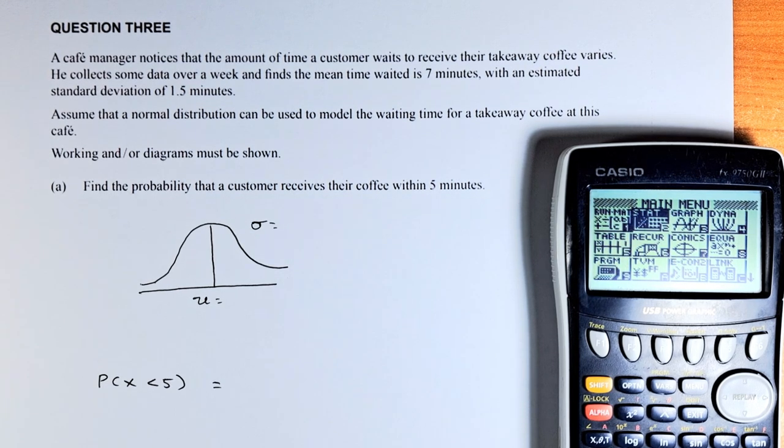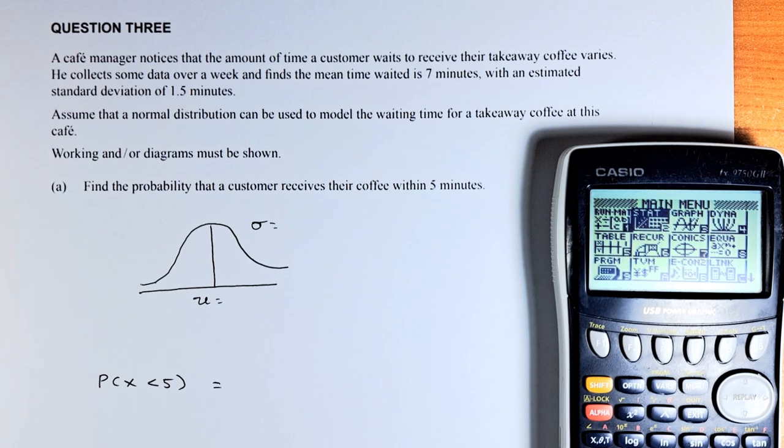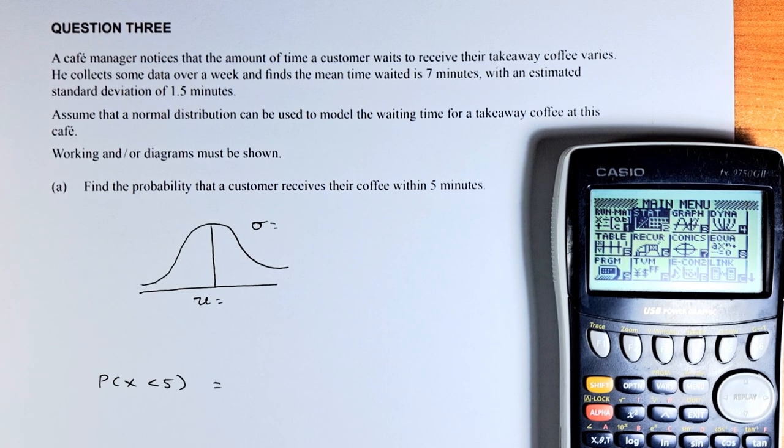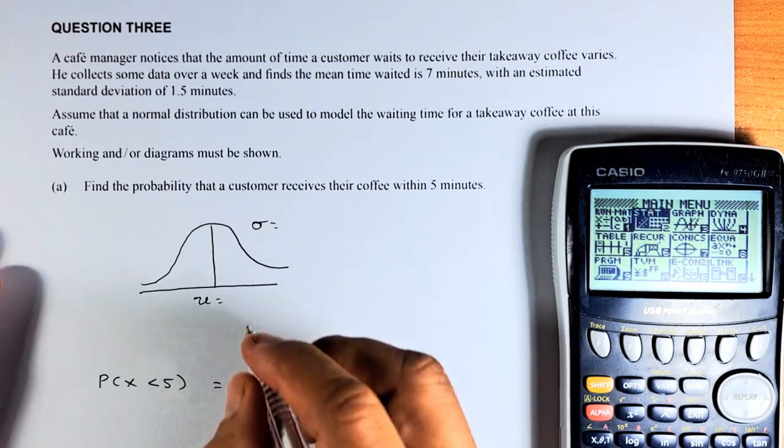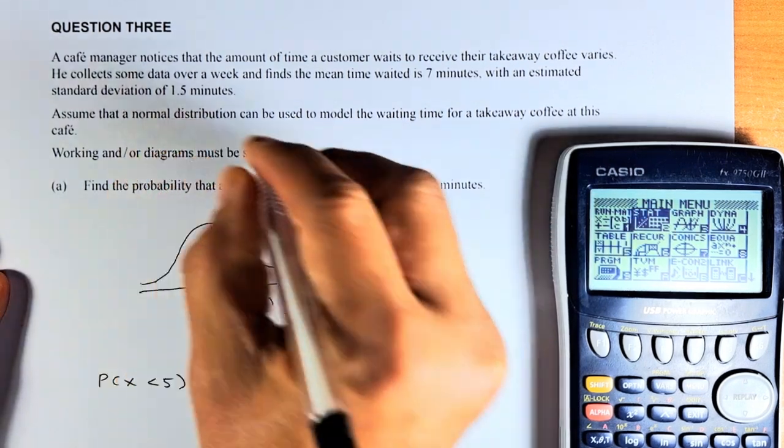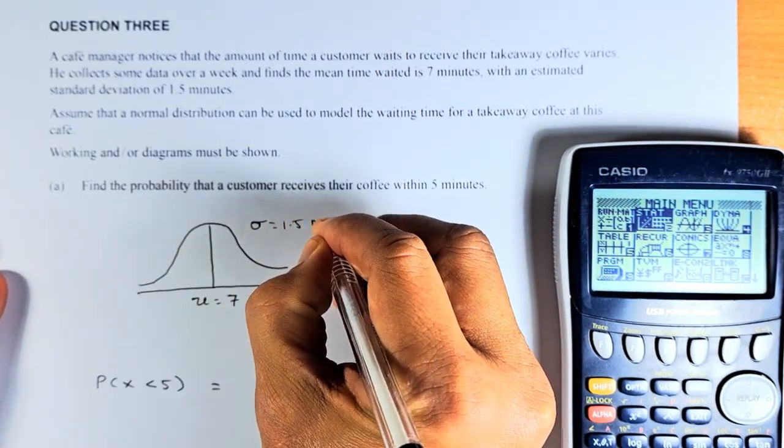A cafe manager notices that the amount of time a customer waits to receive their takeaway coffee varies. He collects some data over the week and finds the mean time waited is 7 minutes with an estimated standard deviation of 1.5. So we know the mean equals 7 minutes and standard deviation is 1.5 minutes.